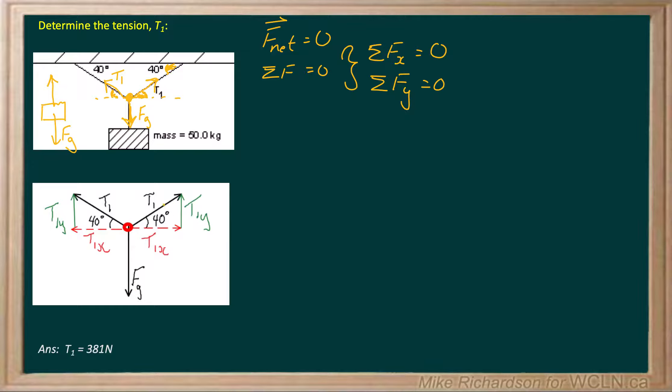And then because T1 is at an angle, those are the ones I've chosen to break down into their components. There's a component in the X direction, which I call T1X. There's a component in the Y direction, T1Y, pulling it up. And on the other ones, like the mirror image, you'll get T1X to the left and T1Y up as well.